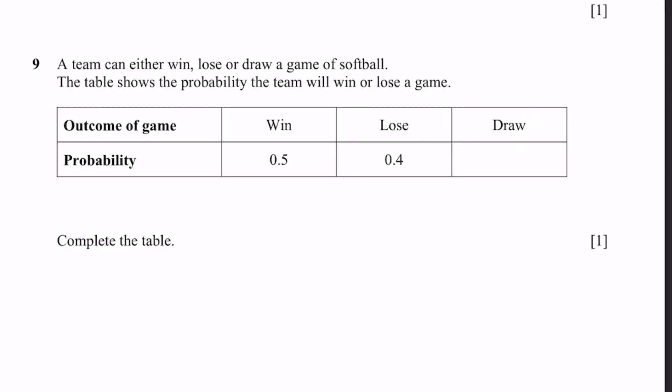Question 9. A team can either win, lose, or draw a game of softball. The probability that the team will win or lose a game is shown on the table. Complete the table. So there's only win, lose, or draw. There's only three options. They have to add up to one. That's the definition of probability. If these are the only outcomes in a total, this total will be 1. So draw will be 1 minus 0.5 minus 0.4, which is 0.1. If you check, these three do add up to one. This is correct.